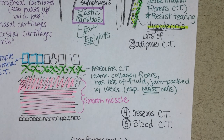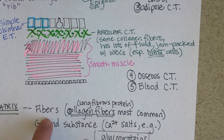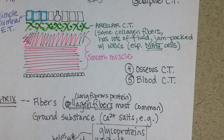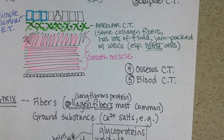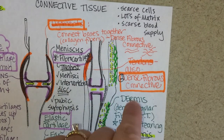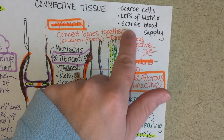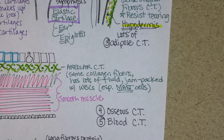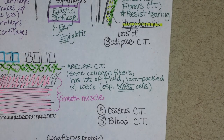If you look at the rules of connective tissue, part of it makes sense. Blood certainly has fibers — fibrinogen can be converted into fibrin to make a blood clot. And it certainly has ground substance if you consider all the minerals and proteins in blood that help pull water in. But remember, we noted that most connective tissue has a scarce blood supply — and that's a little ironic, since blood is itself considered a type of connective tissue.